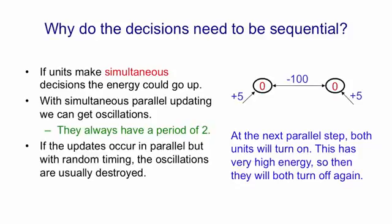If we do the updates in parallel but with random timing, in other words we don't wait for one update to communicate the state to everybody before we consider another update, but we do wait for random lengths of time between doing updates of a given unit, then those random timings will often destroy these biphasic oscillations. That means that the idea that the updates have to be sequential isn't quite as bad as it seems from a biological perspective.